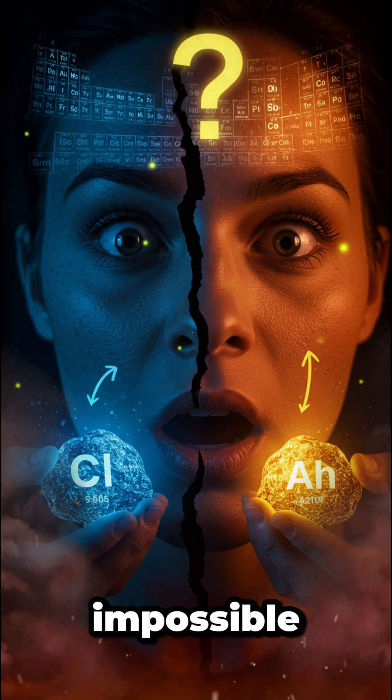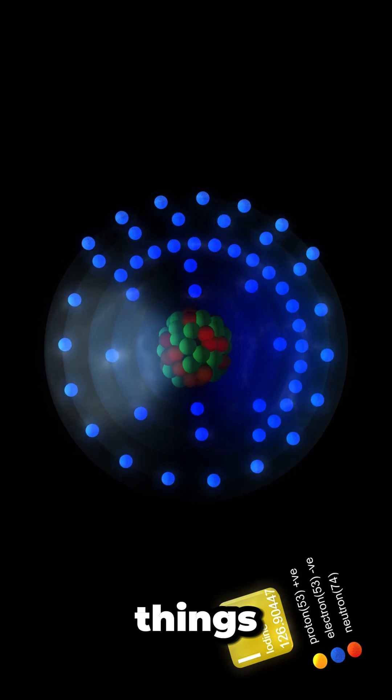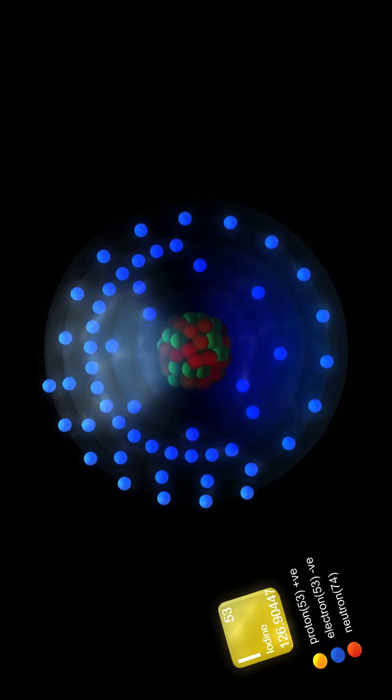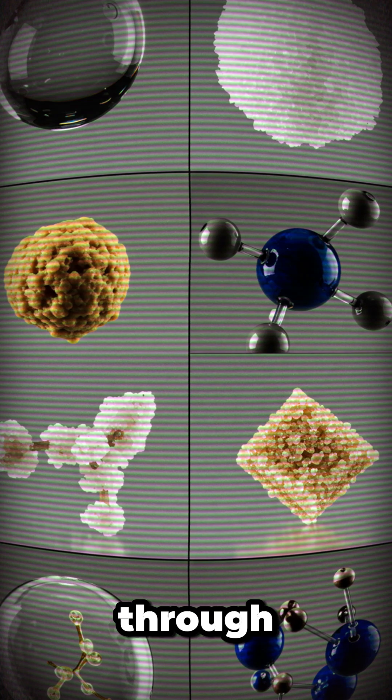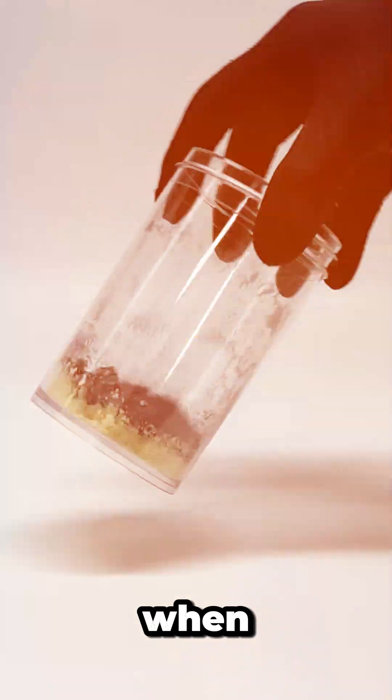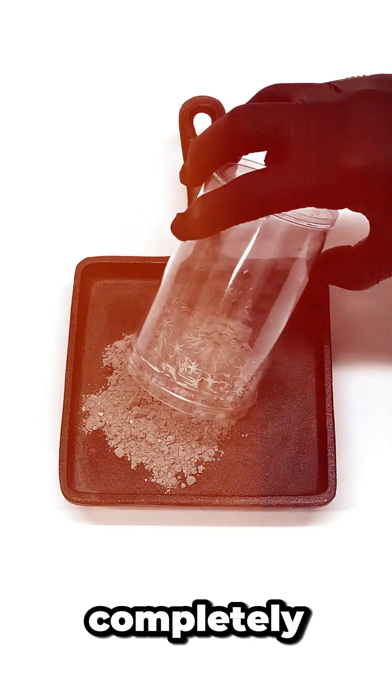Did you know that pure elements are almost impossible to find in nature? Here's why this changes everything. Most things around us aren't pure elements, instead they're compounds - two or more elements bonded together through chemical reactions. Take iron and sulfur: when you heat them together, they don't just mix, they create something completely new - iron sulfide, a totally different substance with new properties.